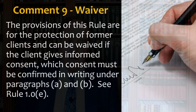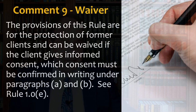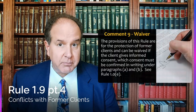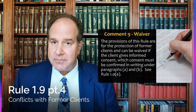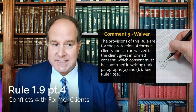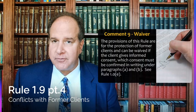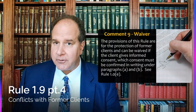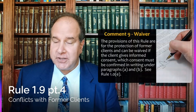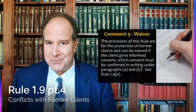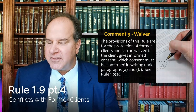The provisions of this rule are for the protection of former clients and can be waived if the client gives informed consent, which must be confirmed in writing under paragraphs A and B. Keep in mind for test questions that this always depends on whether the previous client will give consent. Notice we're talking about waiver, using it almost interchangeably with consent to the conflict. It has to be in writing as you'll remember from 1.9(A) and (B). So even if you previously represented the opposing party and have confidential information you could use against them, if they give consent, it's okay to proceed. Sometimes MPRE questions will sneak in at the end of the hypothetical that the other side actually did give consent.